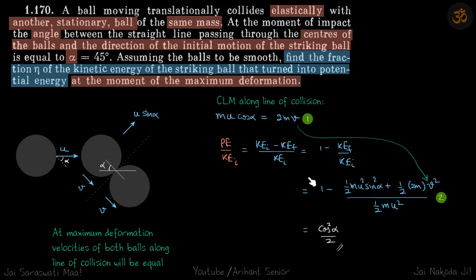It will be half 2m v². So value of v we'll put from here and you will see half mu² will get cancelled from both sides and you will be left with your answer: cos² α by 2.